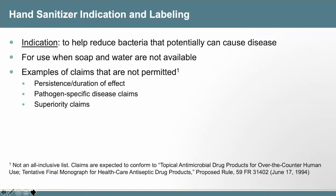The monograph indication for hand sanitizers is a general one: to help reduce bacteria that potentially can cause disease. The products are intended for use when soap and water are not available. Claims that are not permitted include any claims suggesting persistence or duration of effect, such as a claim that the product lasts up to 24 hours, as well as pathogen-specific disease claims including antiviral claims, and any superiority claims to another product.